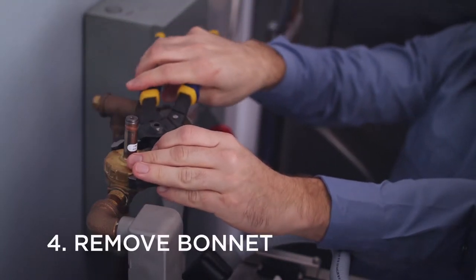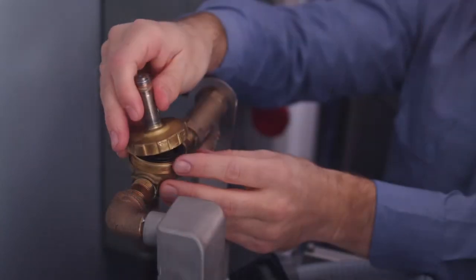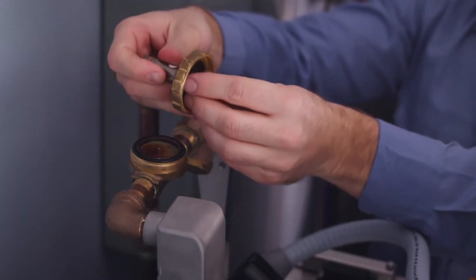Unscrew and remove the valve bonnet from the valve body assembly. Take care not to drop the plunger, located inside the stem of the valve bonnet.